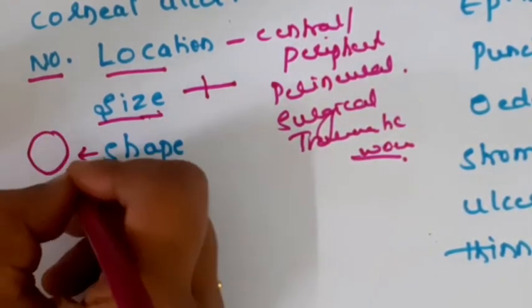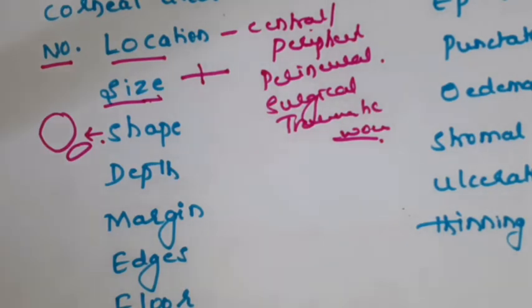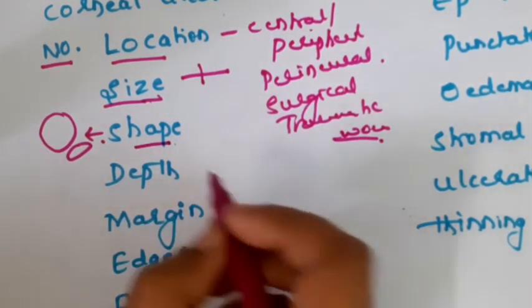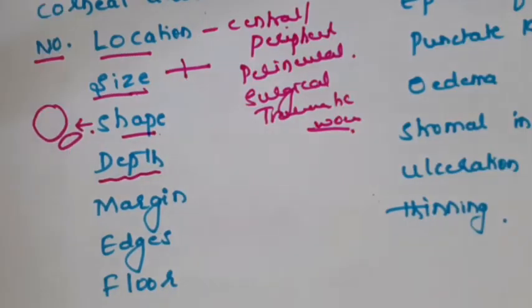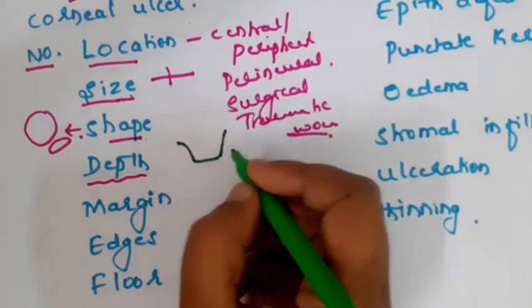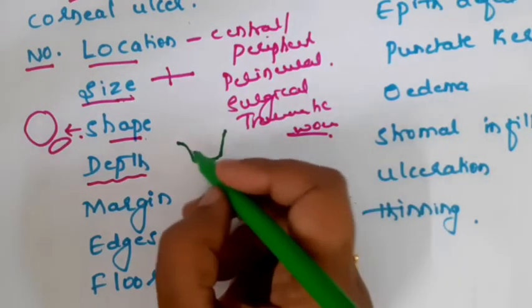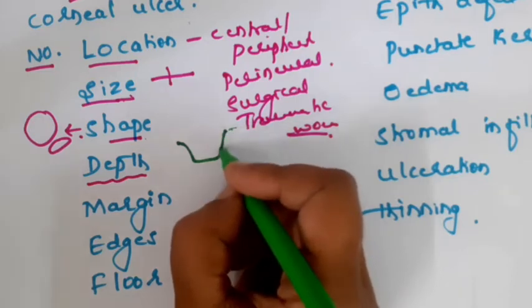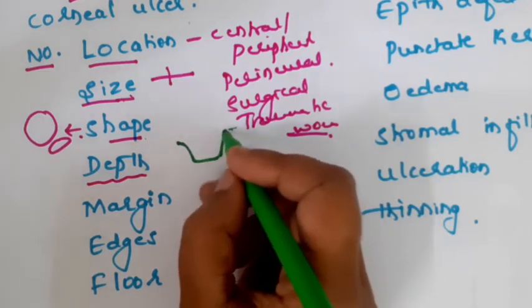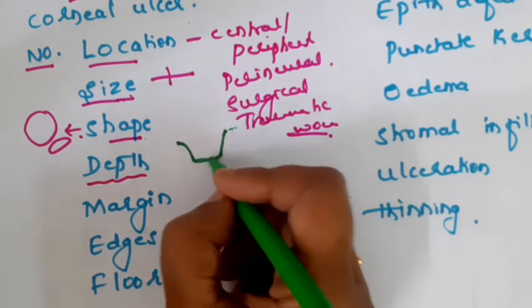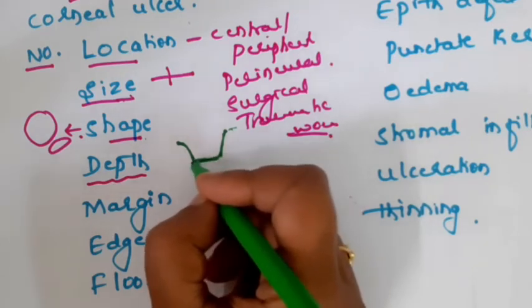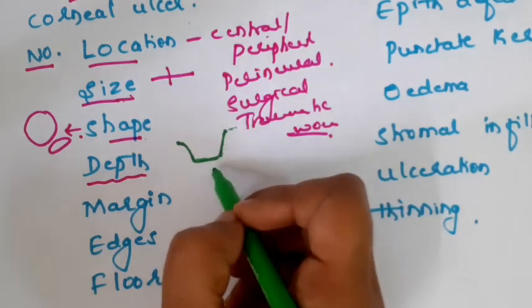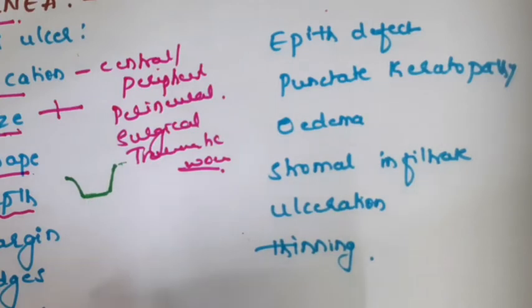Then describe the shape of the corneal ulcer - it can be round, oval, ring-shaped, or there can be multiple satellite lesions. Then describe the depth - comment on the margin, edge, and floor of the ulcer. Mention whether the margins are edematous or flat, whether the edge is sloping or straight cut, and whether the floor has inflammatory cells or is a healing floor.